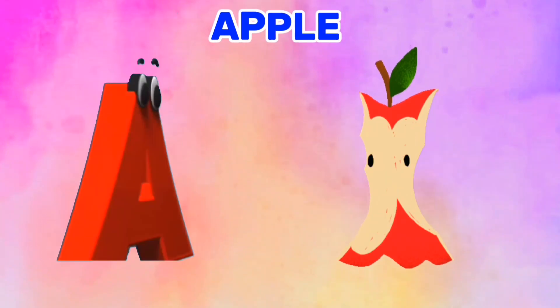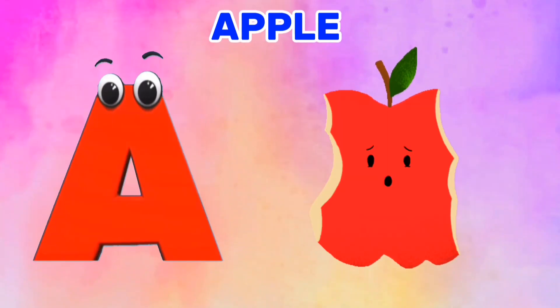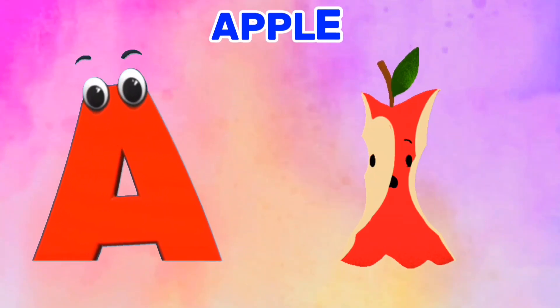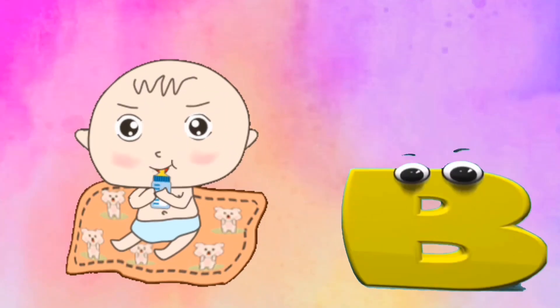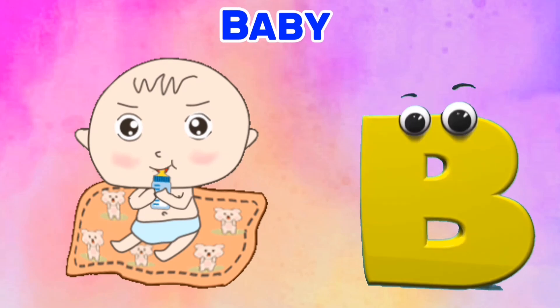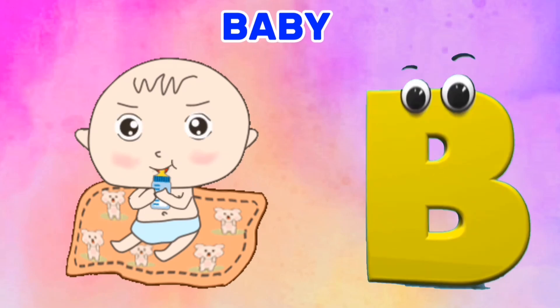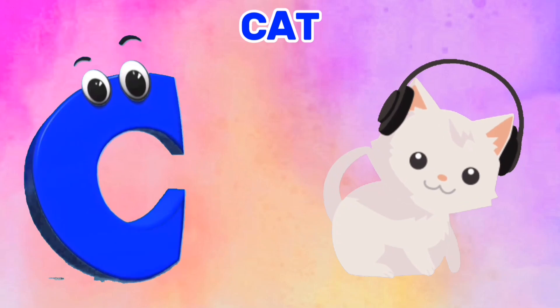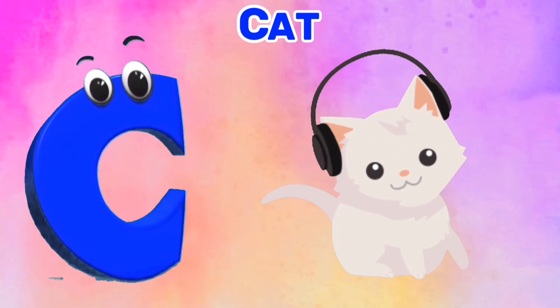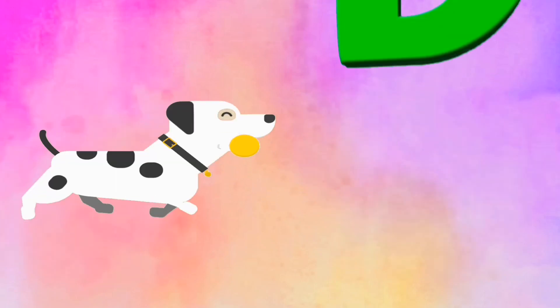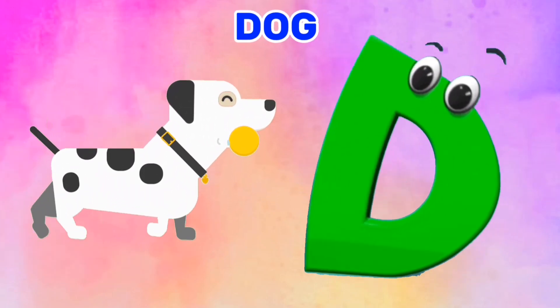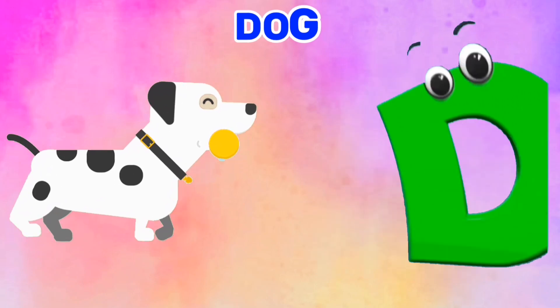A is for Apple. A, A. Apple. B is for Baby. B, B. Baby. C is for Cat. C, C. Cat. D is for Dog. D, D. Dog.